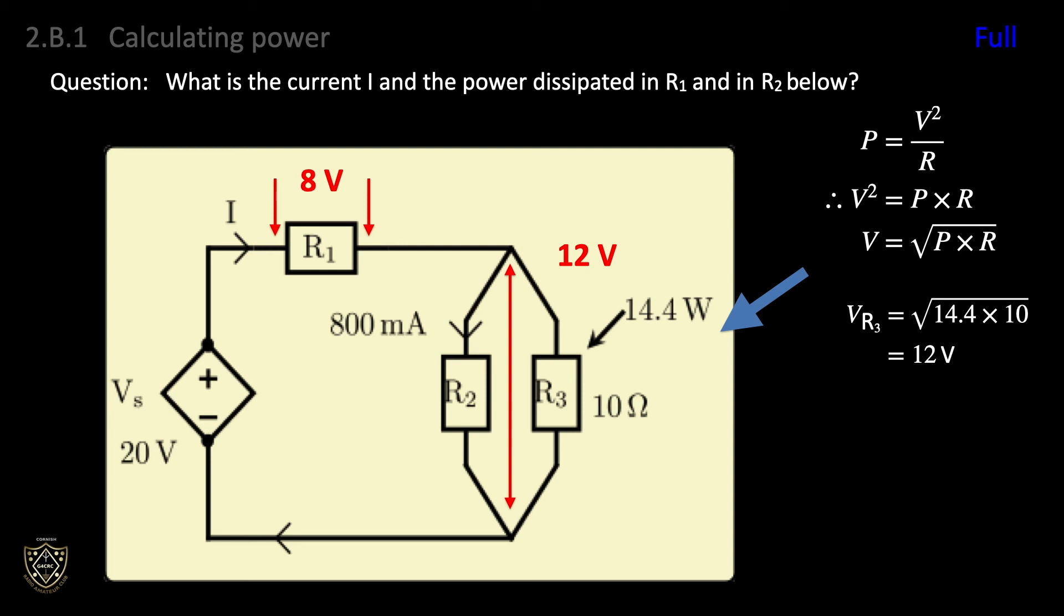Let's now look at the circuit current I. We know that the current through R2 is 800 milliamps or 0.8 amps. So if we determine the current through R3, then we will know the total circuit current because of Kirchhoff's current law. The current through R3 is simply an Ohm's law calculation: the voltage across R3 we just determined was 12 volts, divided by the resistance which is marked as 10 ohms. So the answer is 1.2 amps flowing through R3. And so the total circuit current by Kirchhoff's current law is 2 amps.